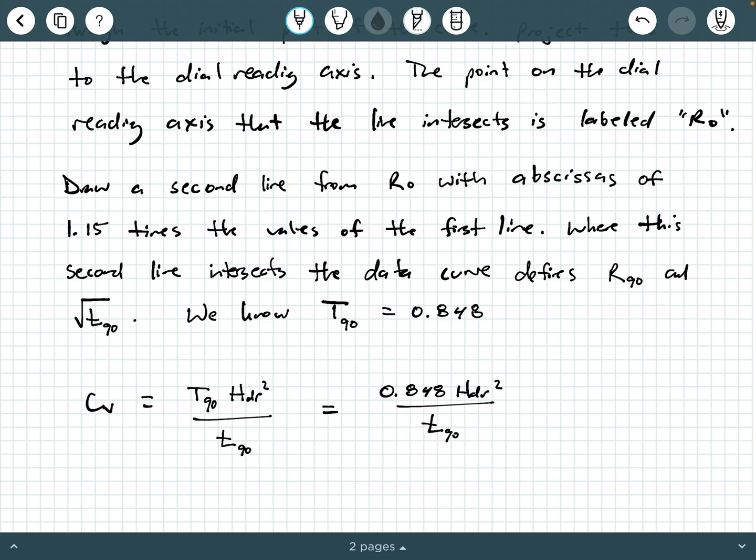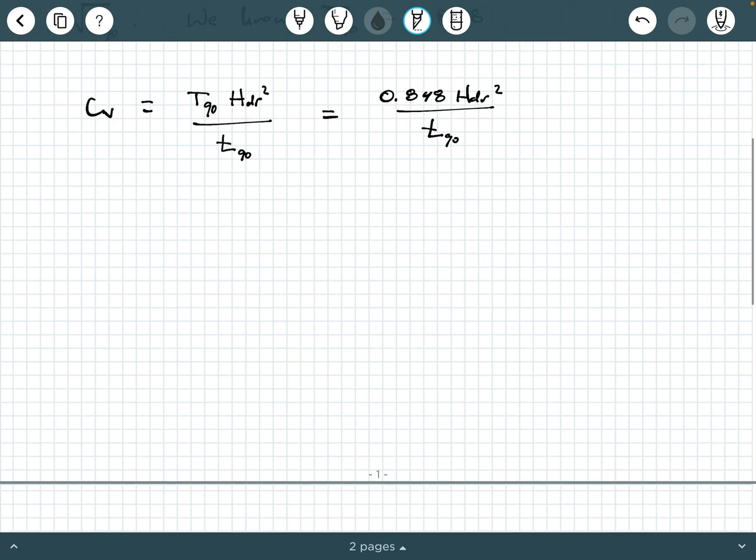And remember, the horizontal axis is square root of time. So if you want to get little T90, you've got to take this square root of T90 value that you obtain from the data and you square it. So let's take a look at how this would be graphically.